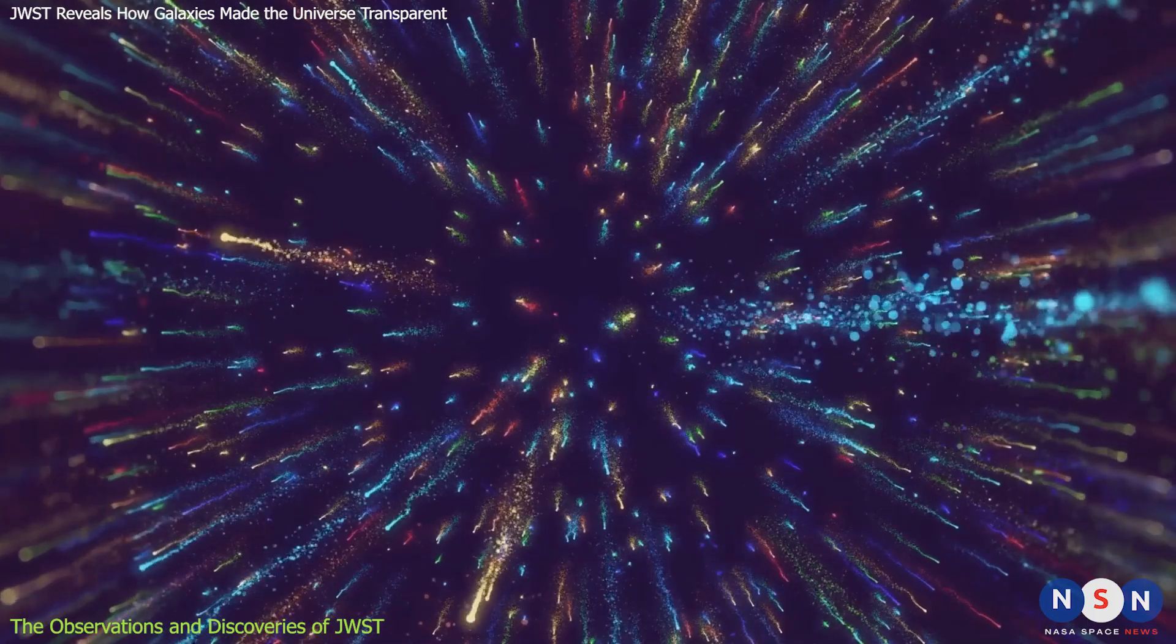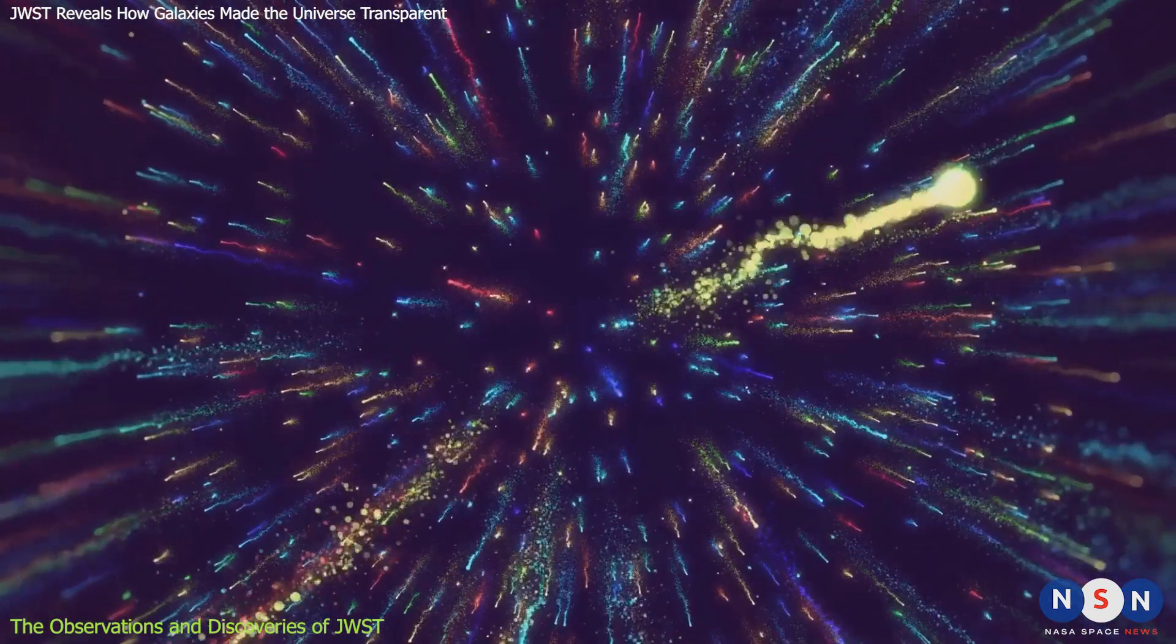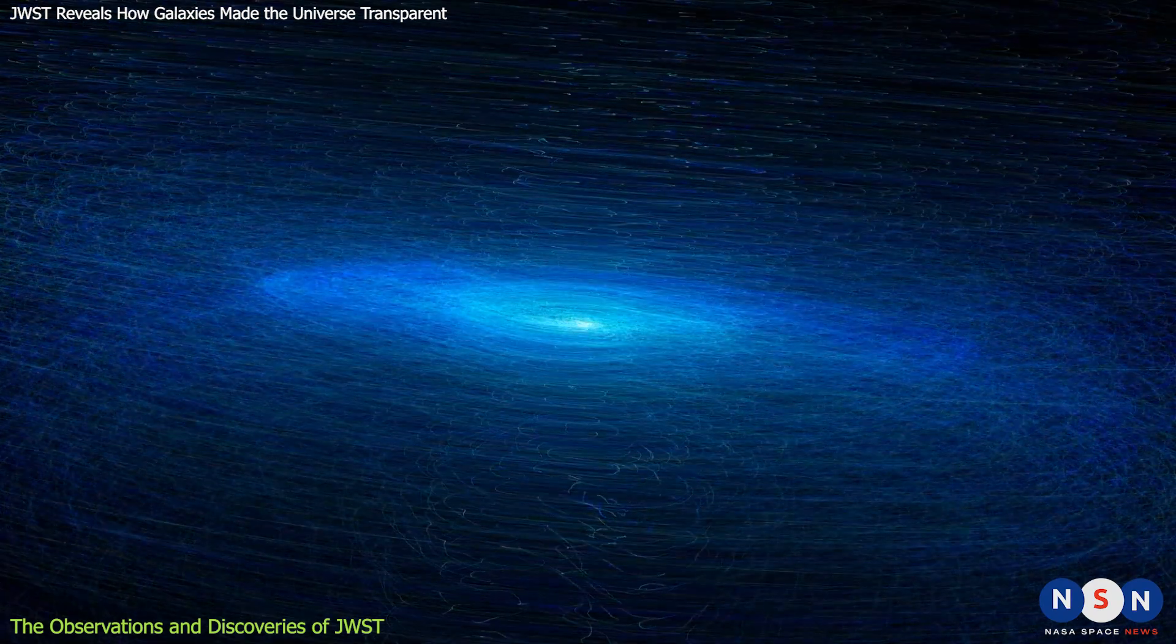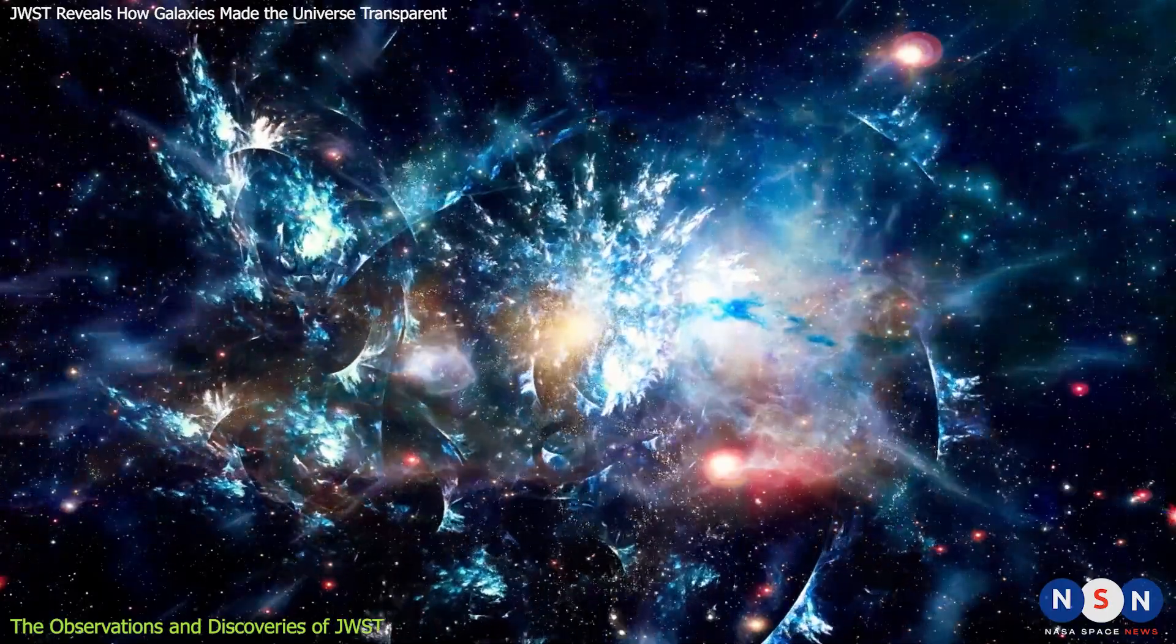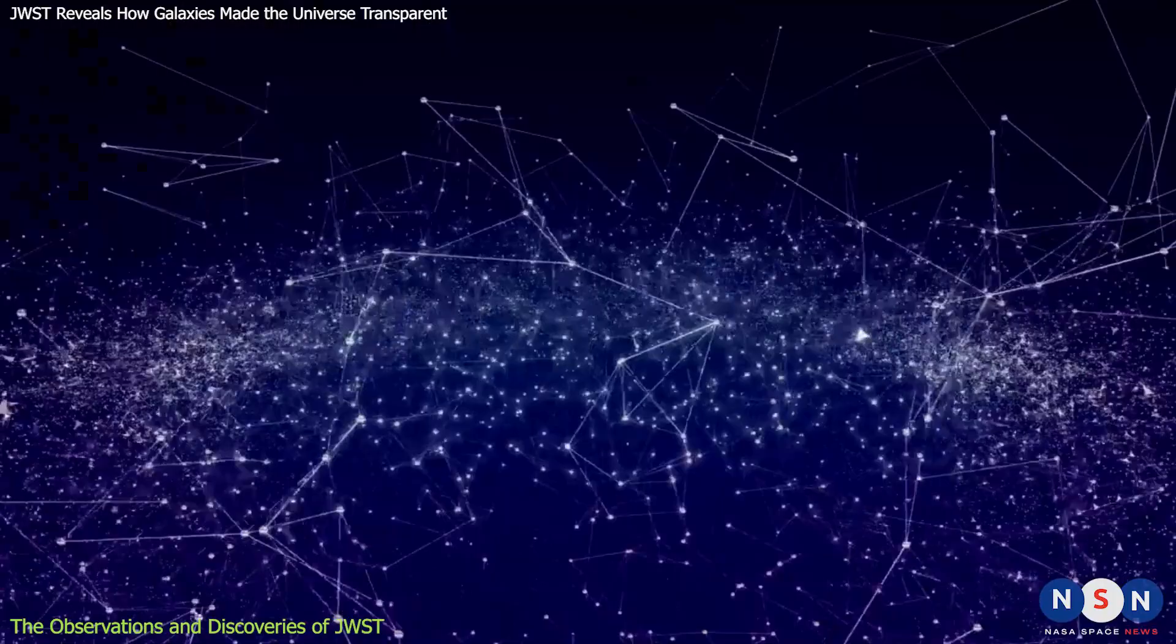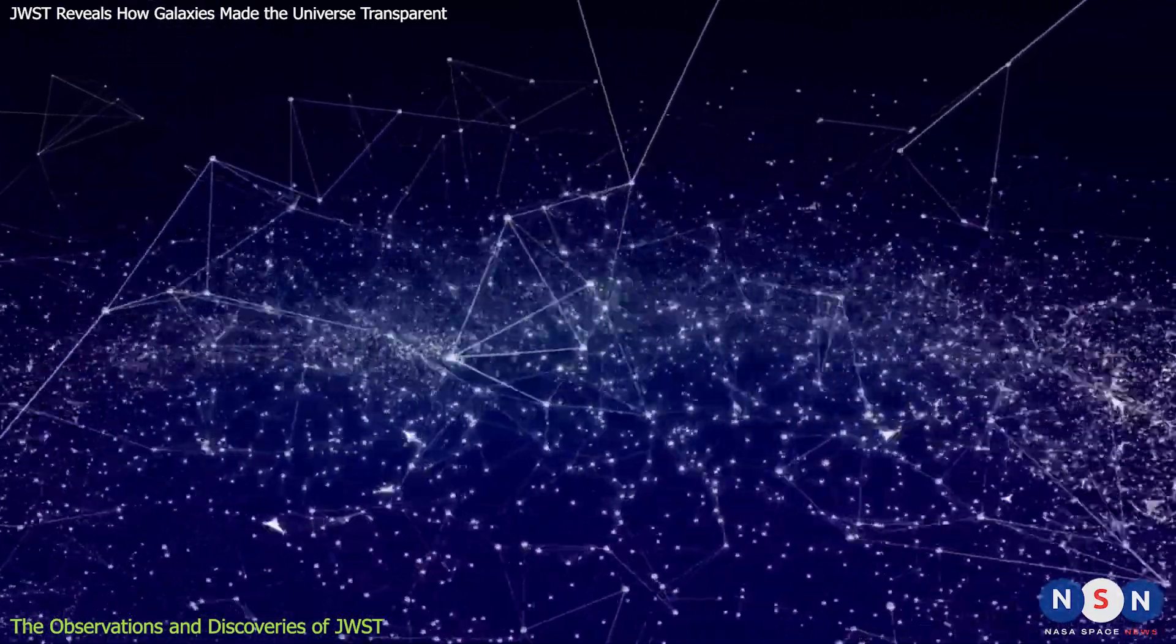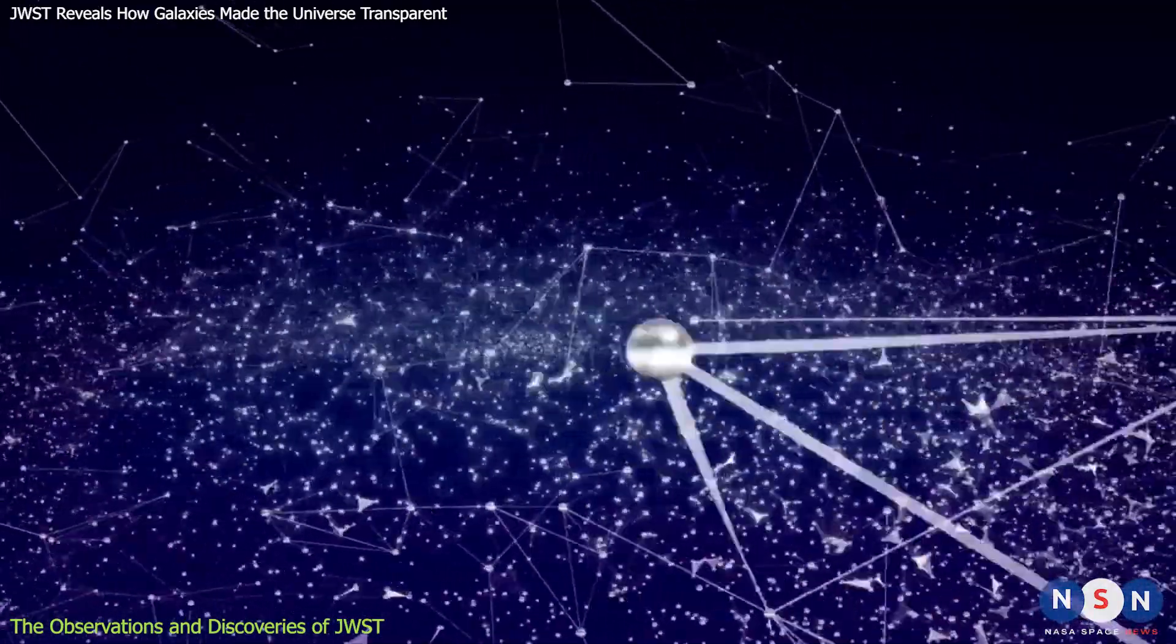Lyman alpha emission is very common in young and star-forming galaxies, since they have a lot of hydrogen gas that is constantly being ionized and recombined by their stars. Lyman alpha emission is also very sensitive to the ionization state of the intergalactic medium, since it can be absorbed or scattered by neutral hydrogen atoms along its path. Therefore, by measuring how much Lyman alpha emission reaches us from distant galaxies, we can infer how much ionizing photons escaped from them and how transparent the intergalactic medium was at that time.